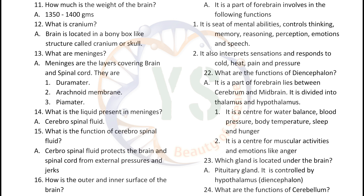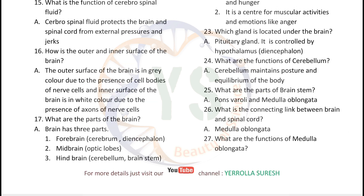What is the liquid present in meninges? Cerebrospinal fluid. What is the function of cerebrospinal fluid? Cerebrospinal fluid protects the brain and spinal cord from external pressures and jerks. How is the outer and inner surface of the brain? The outer surface of the brain is grey in color due to the presence of cell bodies of nerve cells, and the inner surface is white in color due to the presence of axons of nerve cells.